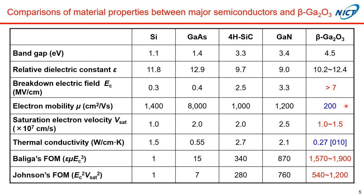The room temperature electron mobility is expected to be around 200 cm²/Vs. This is due to the relatively small energy of the optical phonon branch, and optical phonon scattering dominates room temperature electron mobility even in gallium oxide. The saturation electron velocity is almost the same as those of silicon and gallium arsenide, and slightly smaller than those of silicon carbide and gallium nitride. Thermal conductivity, as you see, is terrible — less than one-tenth of those of silicon carbide and gallium nitride. If we calculate the Baliga figure of merit, which is the most popular figure of merit to assess how suitable a material is for power device applications, it's very good — larger than those of silicon carbide and gallium nitride.